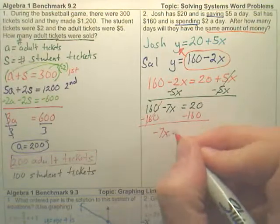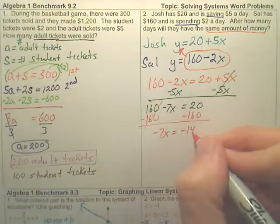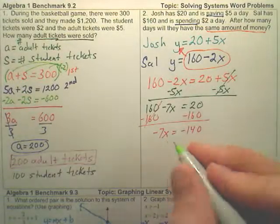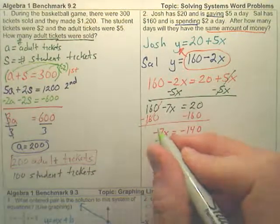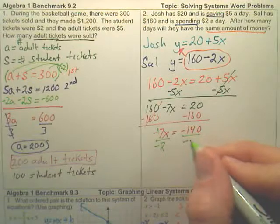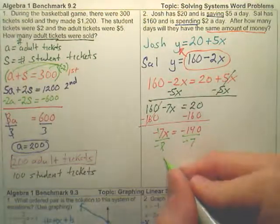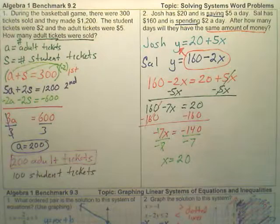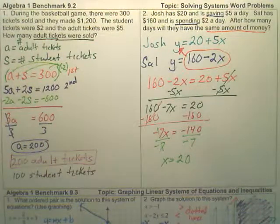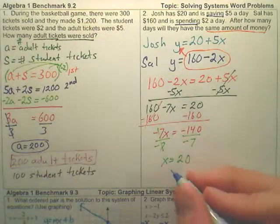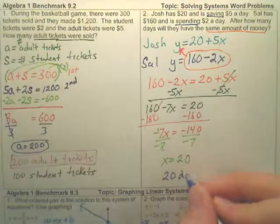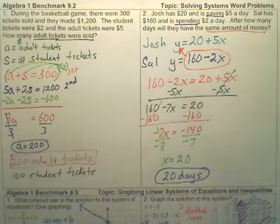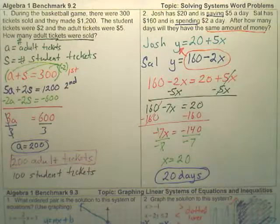So negative 7X, and this looks like negative 140. And to get rid of the negative 7, you divide by negative 7. And it looks like X equals 20. So what does that mean? Well, X represents days. So doesn't that mean after 20 days, they'll have the same amount of money? After 20 days, they will have the same amount of money.